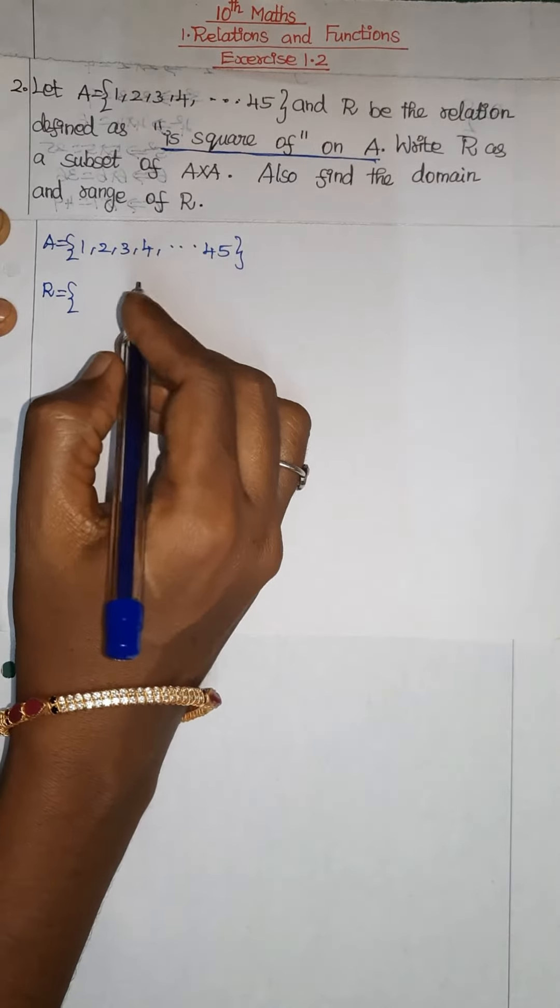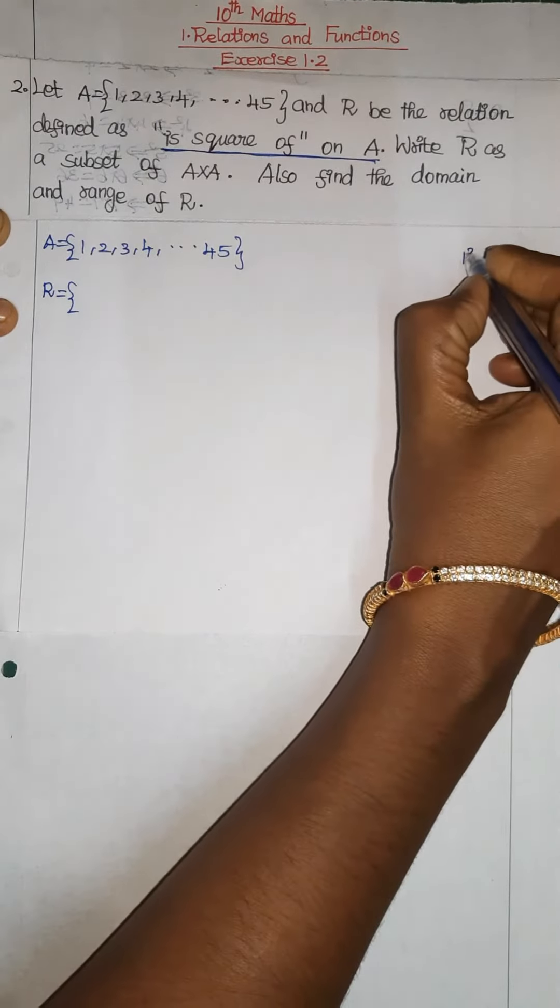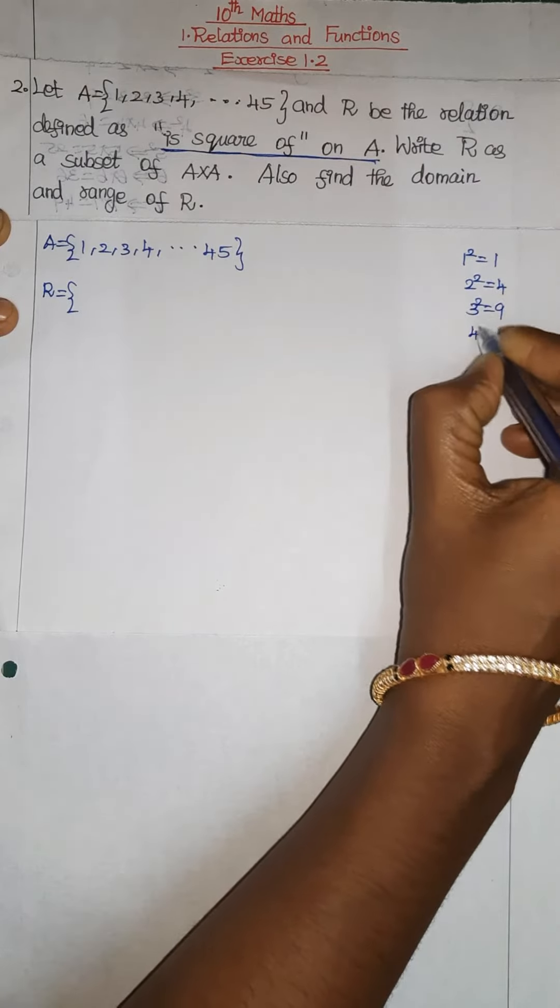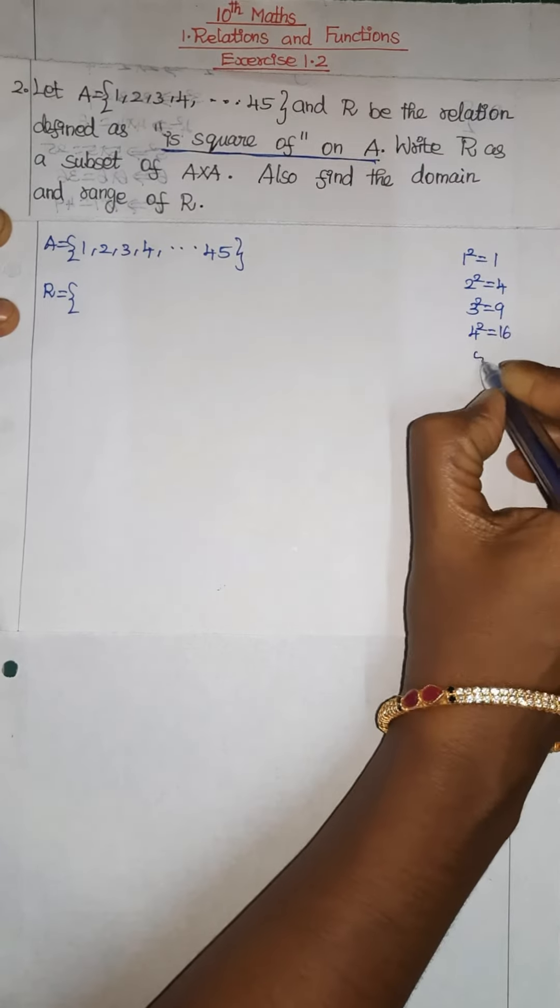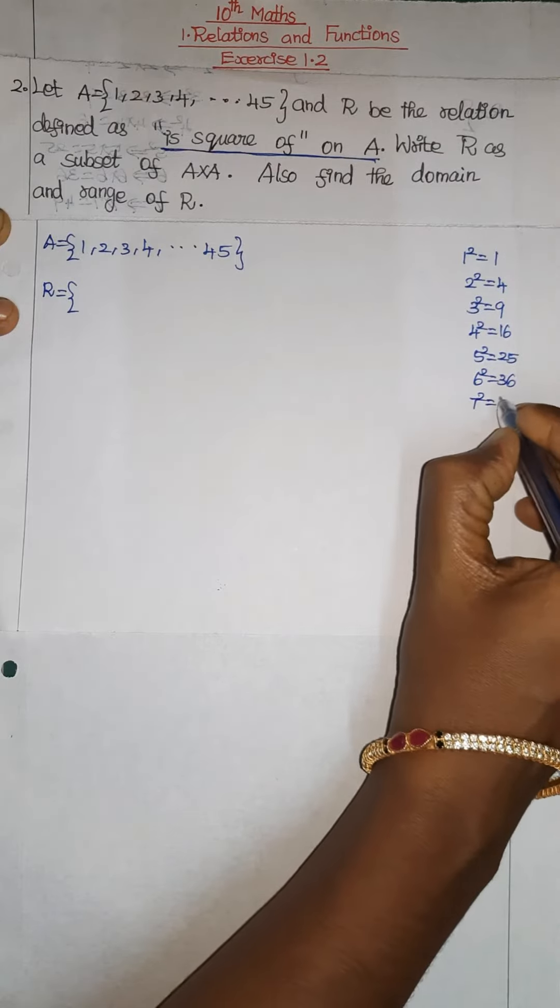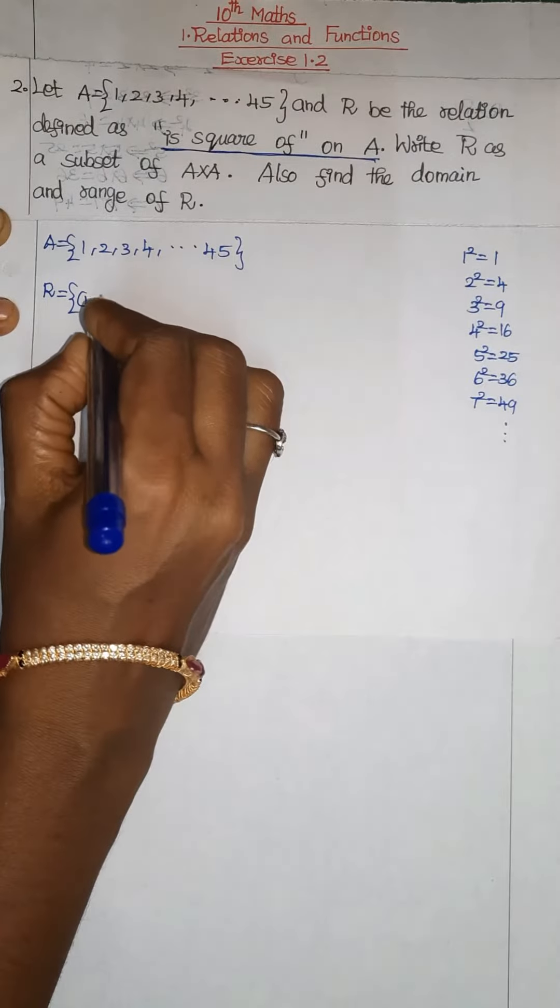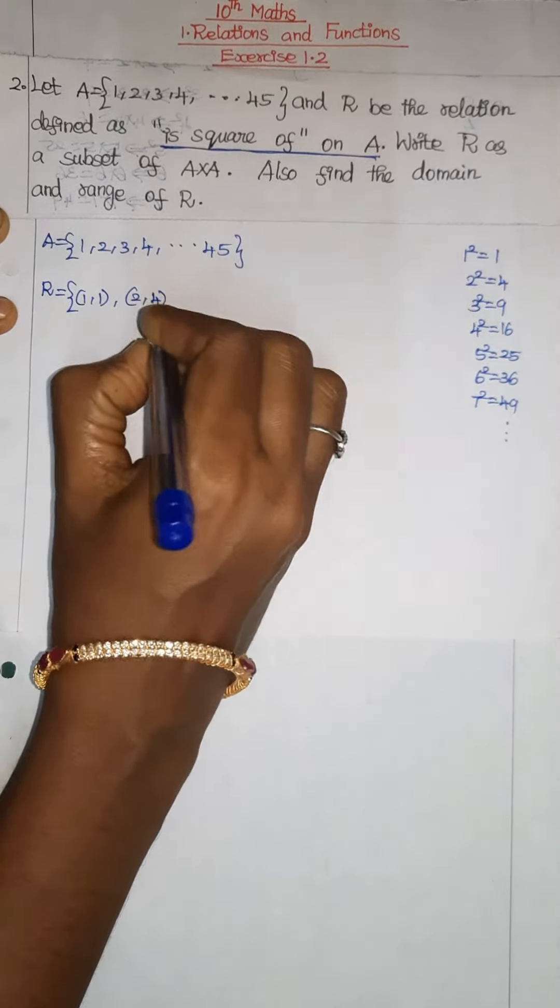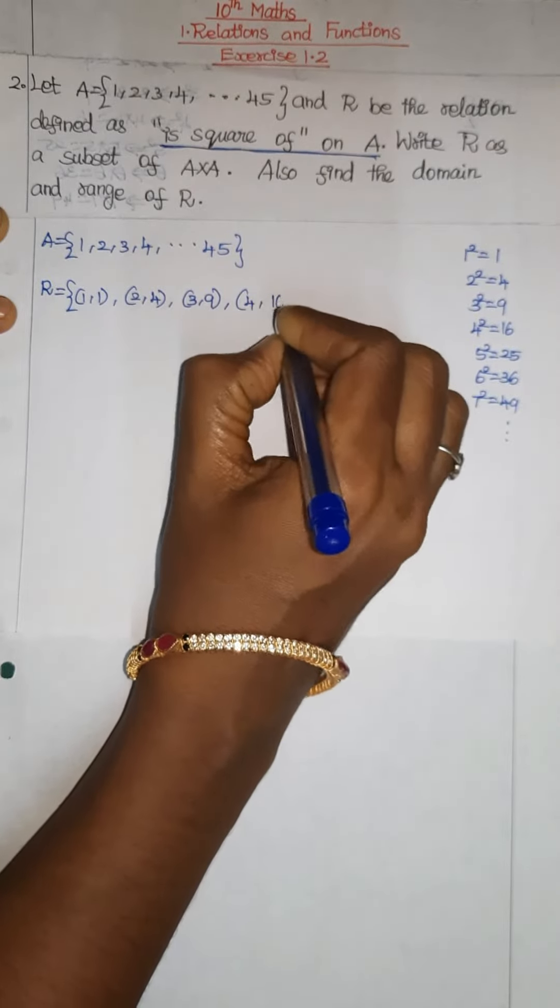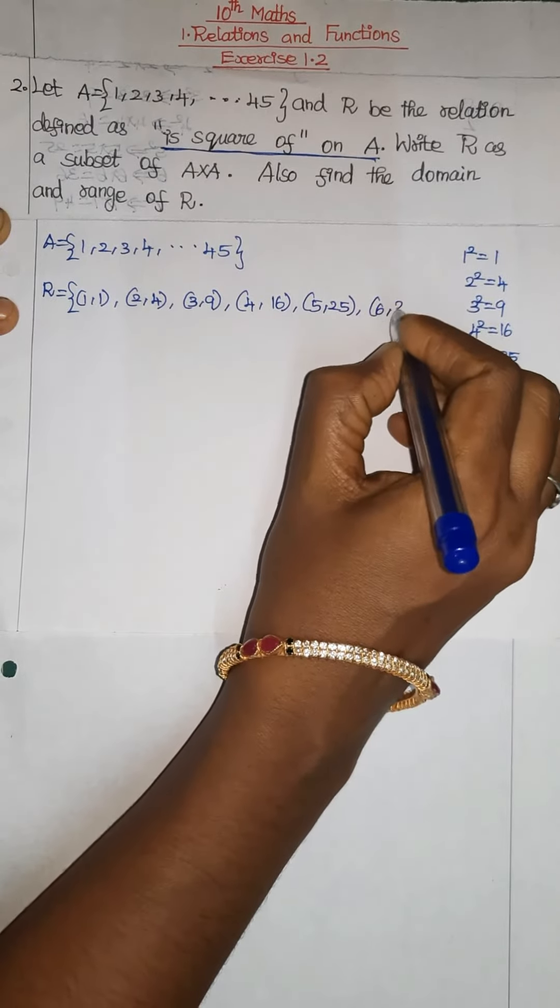Number 1 squared on answer 1. 2 squared is equal to 4. 3 squared is equal to 9. 4 squared is equal to 16. 5 squared is equal to 25. 6 squared is equal to 36. 7 squared is equal to 49, and so on. Number 1 on square number 1, 2 squared is equal to 4, 3 squared is equal to 9, 4 squared is equal to 16, 5 squared is equal to 25, 6 squared is equal to 36.